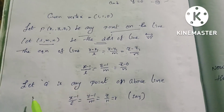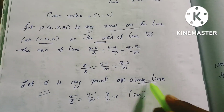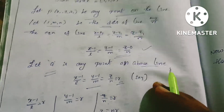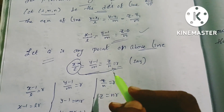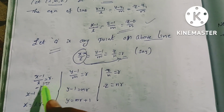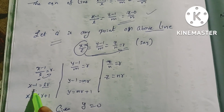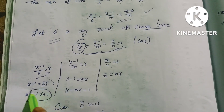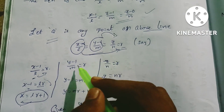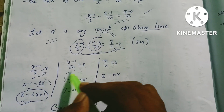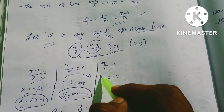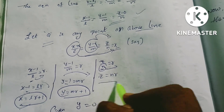Let Q be any point on the above line. This line equals r. So x - 1 = Lr, giving x = Lr + 1. Then y = Mr + 1, and z/N = r, so z = Nr.